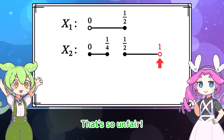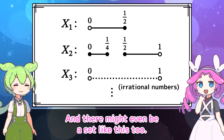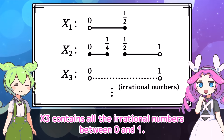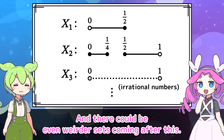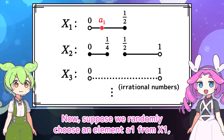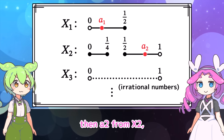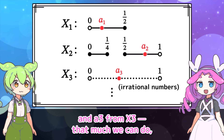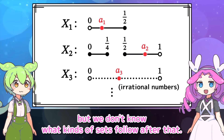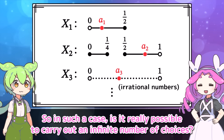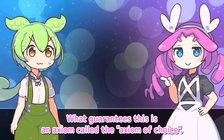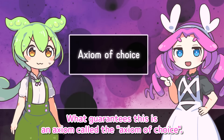What is this? That's so unfair! And there might even be a set like this too — X sub 3 contains all the irrational numbers between 0 and 1. That's a really strange set. And there could be even weirder sets coming after this. Suppose we randomly choose an element A sub 1 from X sub 1, then A sub 2 from X sub 2, and A sub 3 from X sub 3. That much we can do. But we don't know what kinds of sets follow after that. So in such a case, is it really possible to carry out an infinite number of choices?